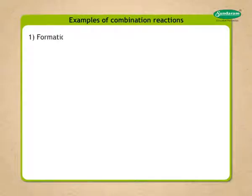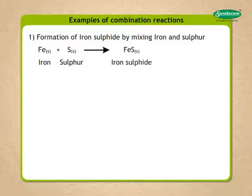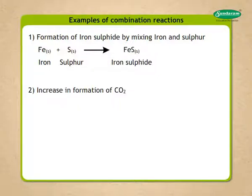Example 1: In the laboratory, you have performed an experiment for the formation of iron sulfide by mixing iron and sulfur. Fe(s) + S(s) → FeS(s). Example 2: Increase in formation of carbon dioxide in the environment leads to acid rains when it mixes with water vapor.